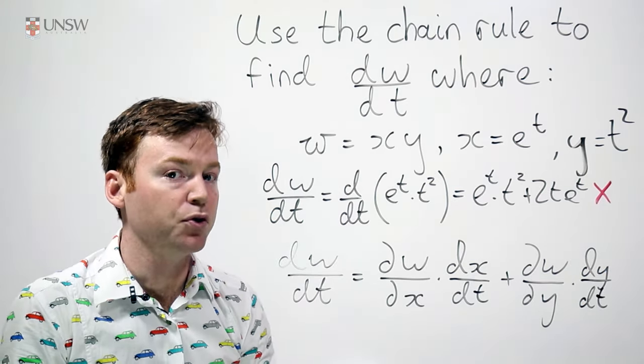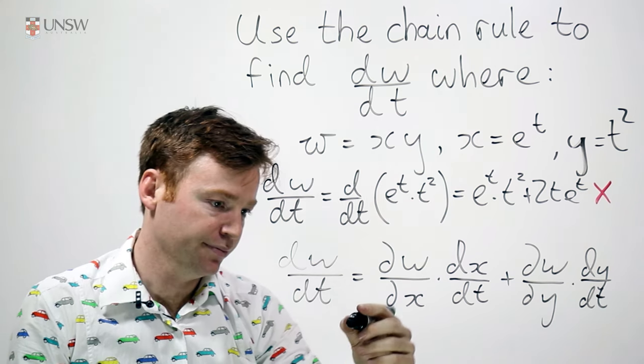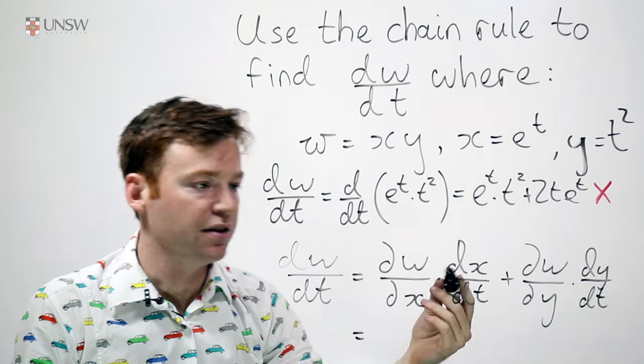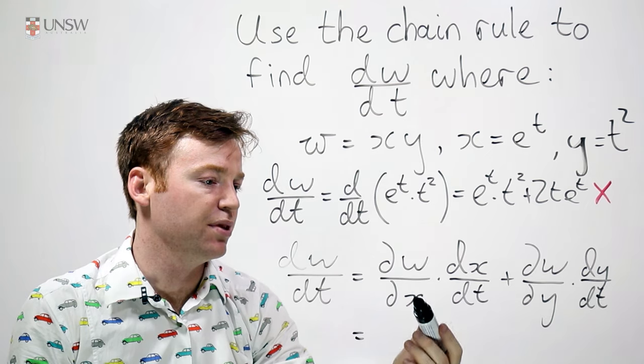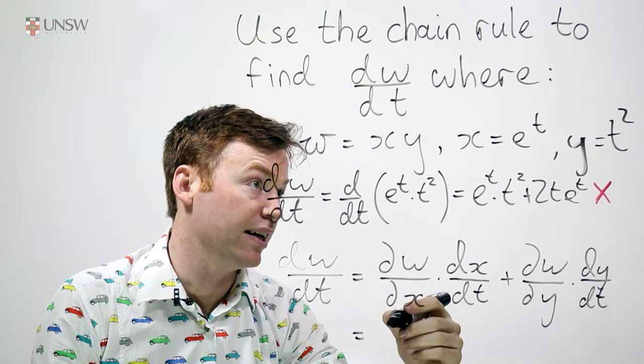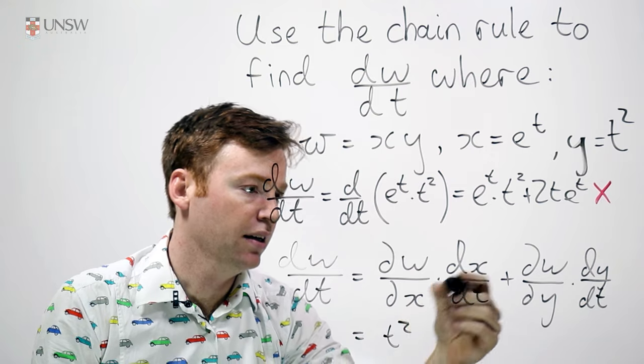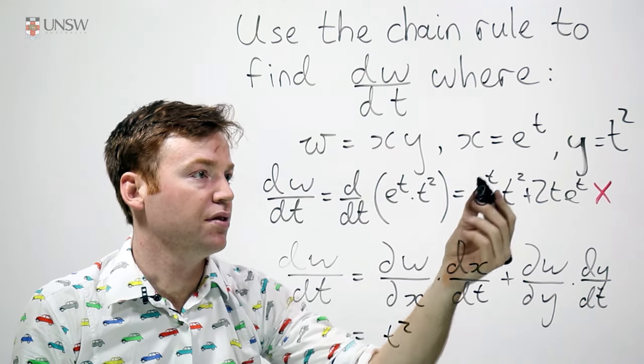This is the chain rule for a function of two variables. And this is stuff we can just evaluate. So dw/dx, that's just y. And y is t squared. dx/dt, that's just e to the t.